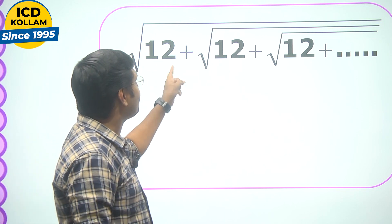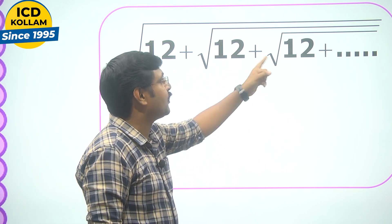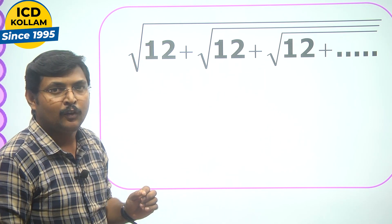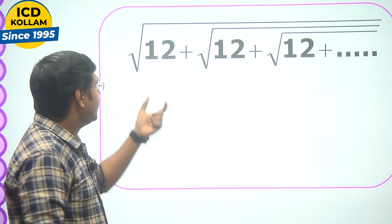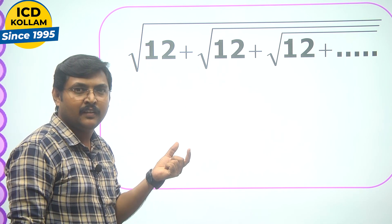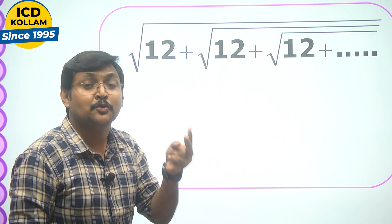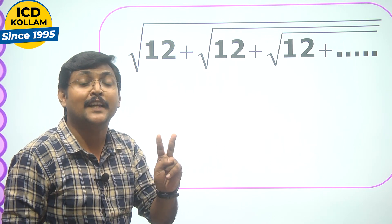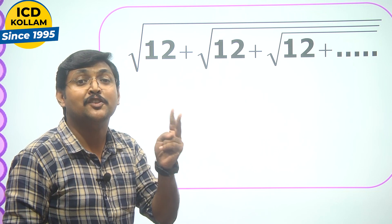Here the question is square root of 12 plus square root of 12 plus square root of 12 plus etcetera. What we need to do is take that number 12. After that think like this: two numbers are there, the product of that two numbers should be 12 and the difference should be 1.